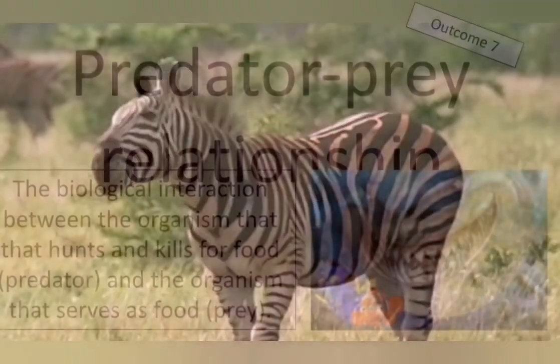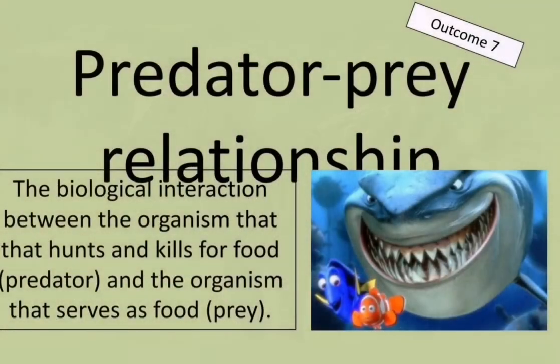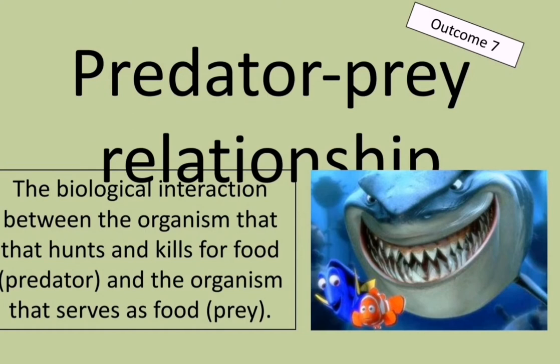The first relationship we'll be looking at is called the predator-prey relationship. We already learnt about this in grade 10 and 11. A predator-prey relationship is the biological interaction between organisms: the one that hunts, and the one that is being hunted.